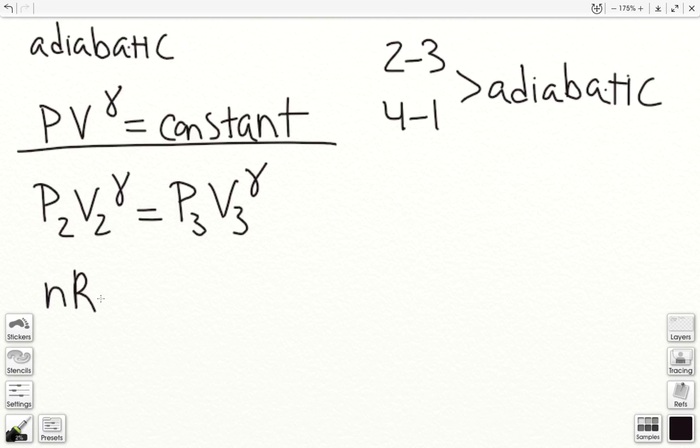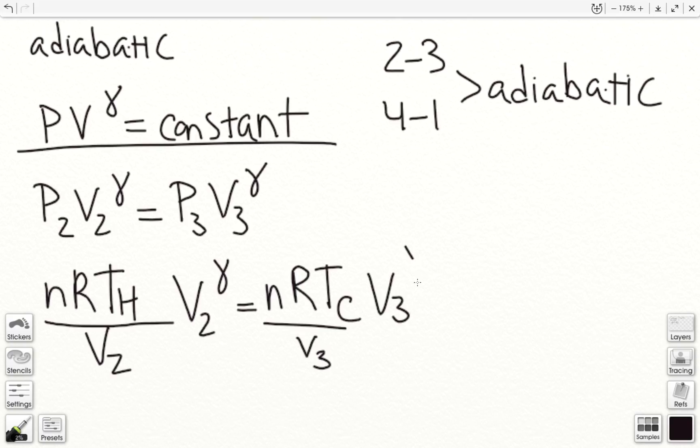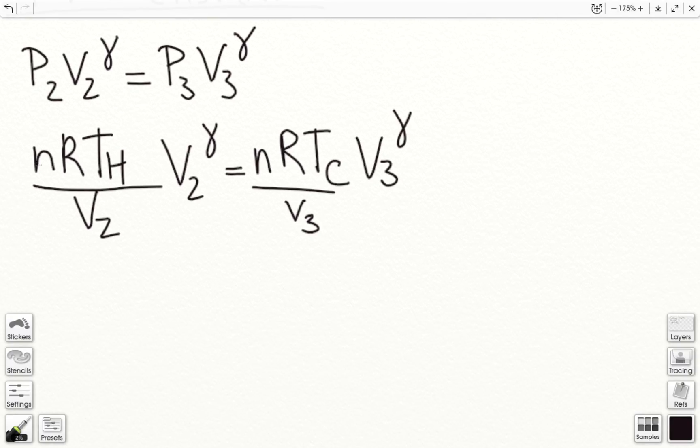Sorry, the temperature at this state is Th over volume. We have P2V2 gamma is equal to nR, temperature at state 3 is Tc, over v3, v3 gamma. So basically, I can cancel out the nR. I have Th over Tc is equal to v3 over v2 to the gamma minus 1.